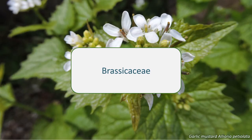Today we're going to look at the Brassicaceae, or cabbage family. This family is still sometimes referred to by its old name of Cruciferae, so called after the pattern of the plant's flower petals. The 4,000 or so species of mostly annual and perennial herbs, plus a few shrubs, are found all across the world, though predominantly in the northern hemisphere.